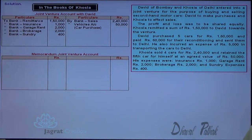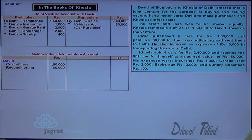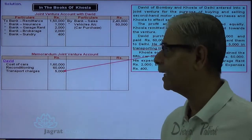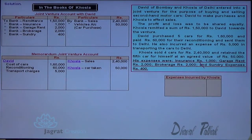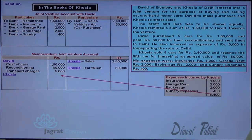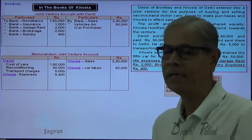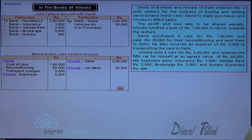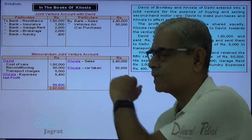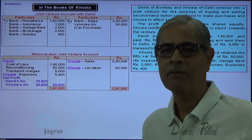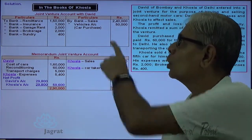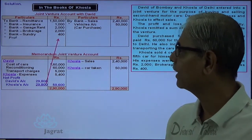In the memoranda joint venture account, remittance is not recorded as it is not an expense. Five cars are purchased for rupees 1,60,000 — these are debited. Reconditioning expenses and transportation charges paid by David are also debited. Sales proceeds received by Khosla and the car retained by Khosla at 50,000 are credited. Expenses of 5,400 paid by Khosla are debited. Total revenue minus total expenses gives the profit. Total joint venture profit is rupees 59,600. Since profit is shared equally, Khosla's share is rupees 29,800 and David's share is also rupees 29,800.